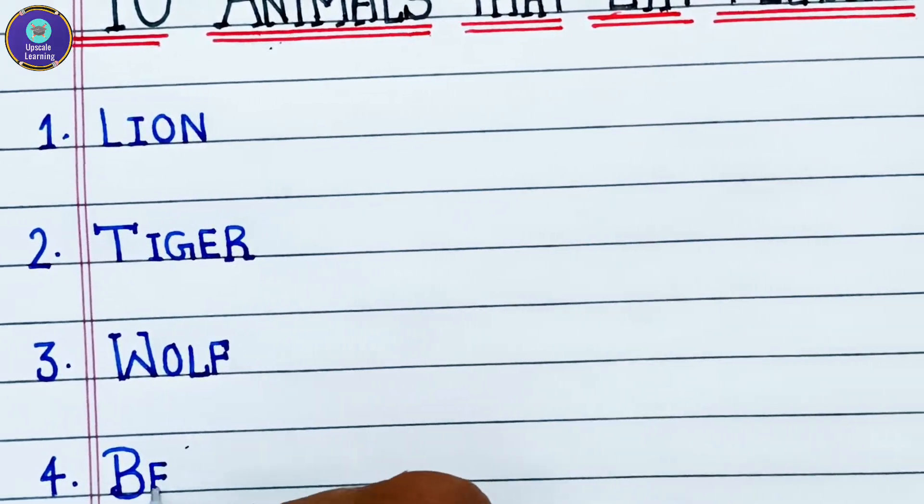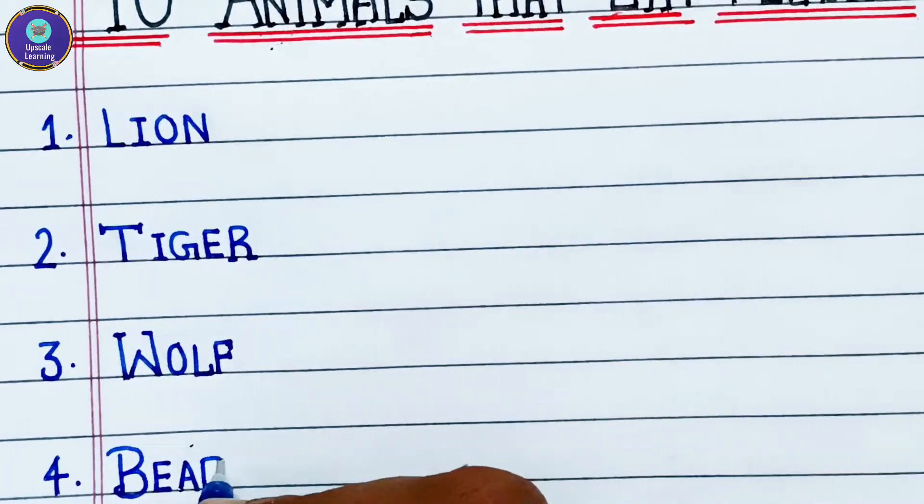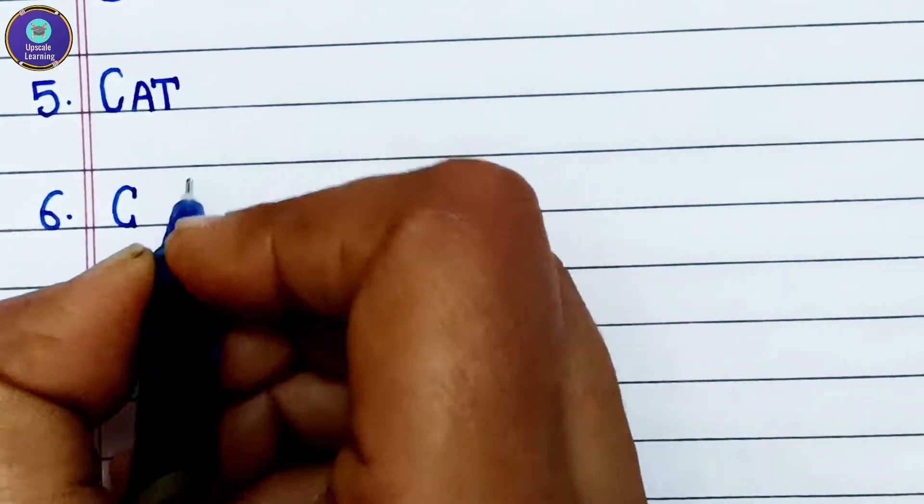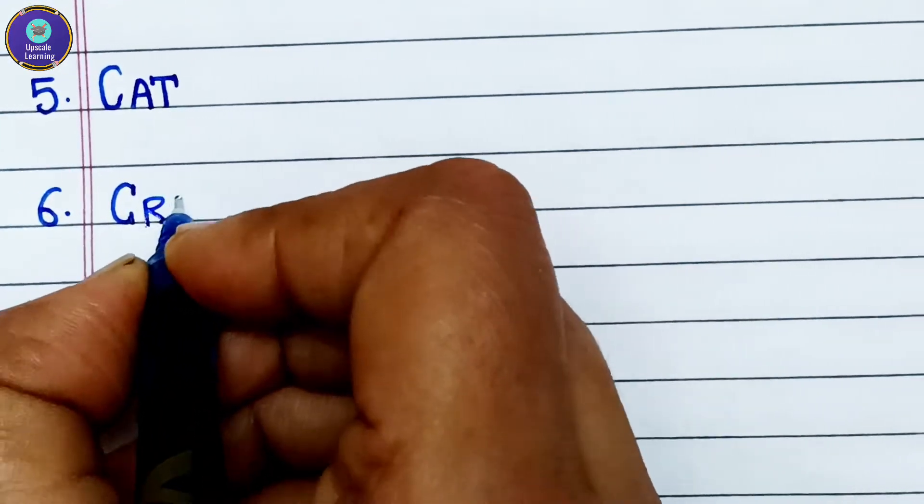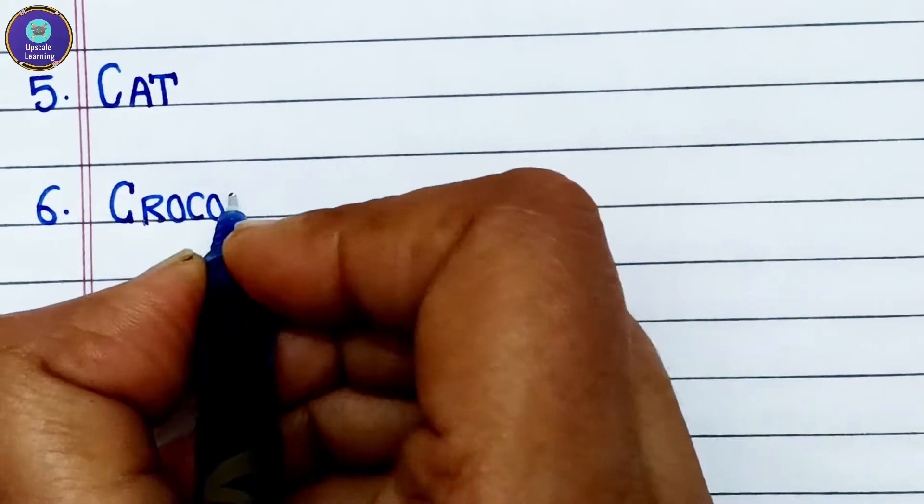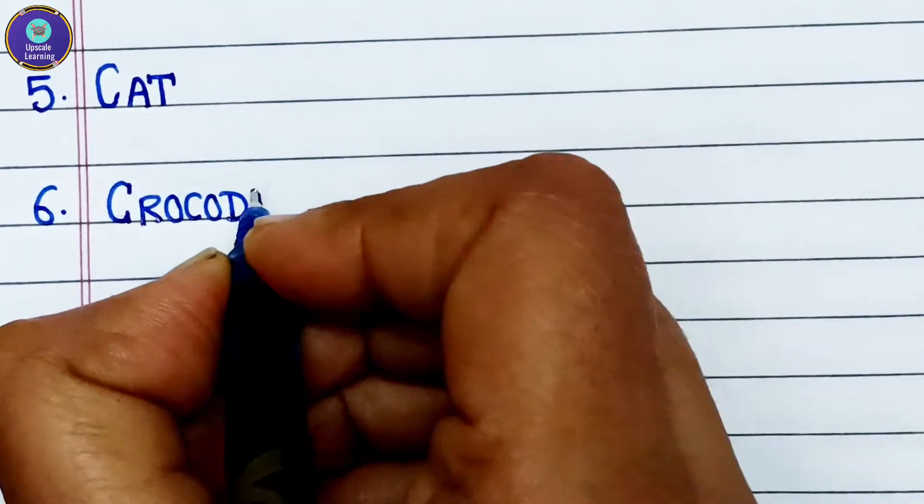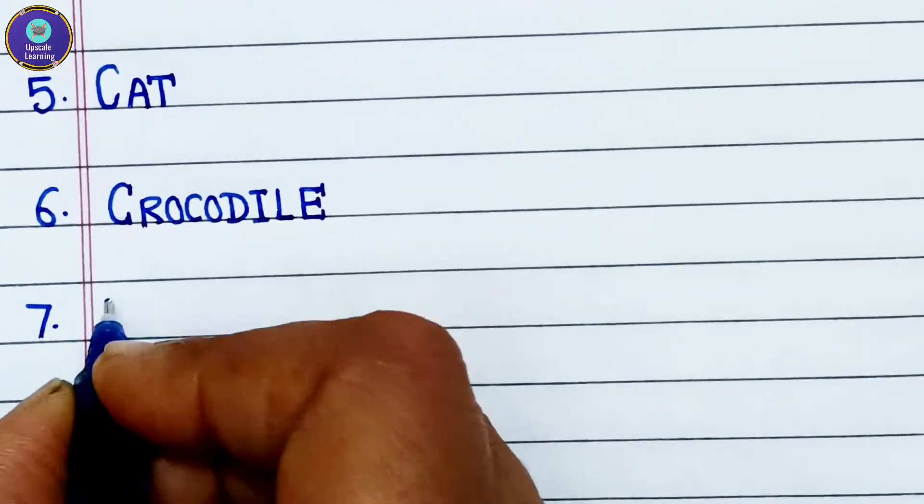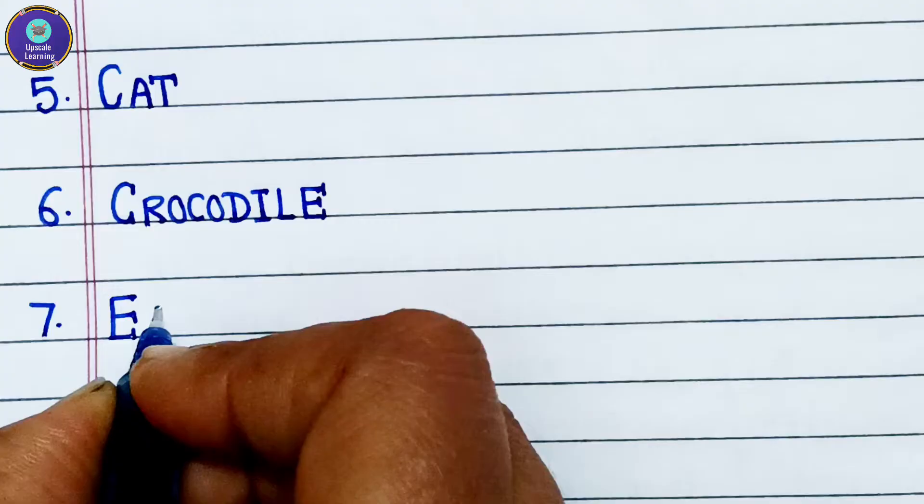Fourth animal is bear, B-E-A-R, bear. Fifth is cat, C-A-T, cat. Sixth is crocodile, C-R-O-C-O-D-I-L-E, crocodile. Seventh one is eagle.